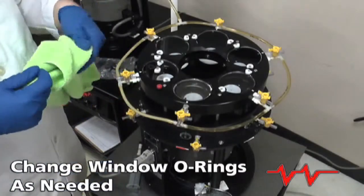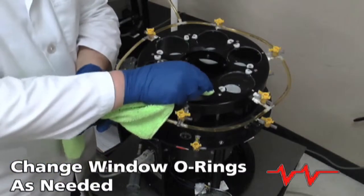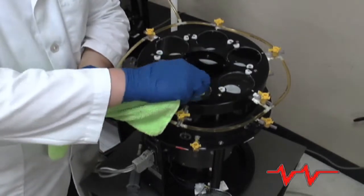Change window O-rings as needed. If you notice fluid leaking around the window edges or salt buildup, change the O-ring.